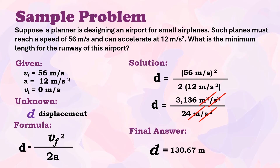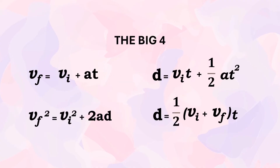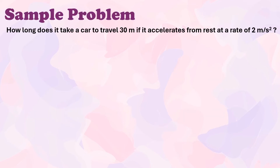Let us have another example. How long does it take a car to travel 30 meters if it accelerates from rest at a rate of 2 m/s²? Let us identify the given: distance = 30 m, acceleration = 2 m/s², initial velocity = 0 m/s.